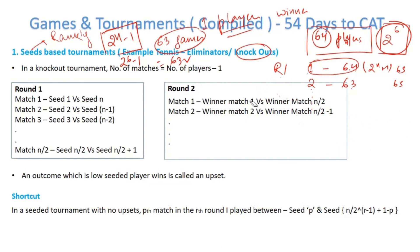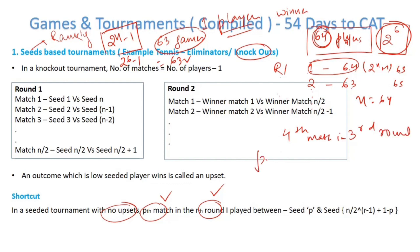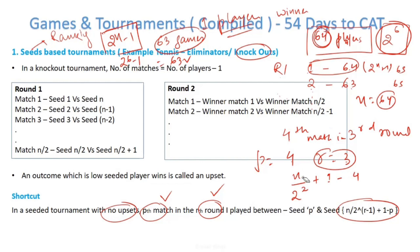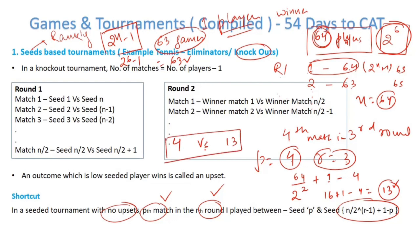Let's talk about a very important shortcut. To calculate who plays the pth match in the rth round when there are no upsets, use the formula: a player seeded p will play the player seeded n divided by 2 to the power (r minus 1), plus 1, minus p. For example, with 64 players (n = 64), to find who plays the 4th match in the 3rd round: p = 4, r = 3. So 64 divided by 2 squared, plus 1 minus 4 equals 16 plus 1 minus 4, which is 13. Seed 4 will play seed 13. This is applicable only when there are no upsets.